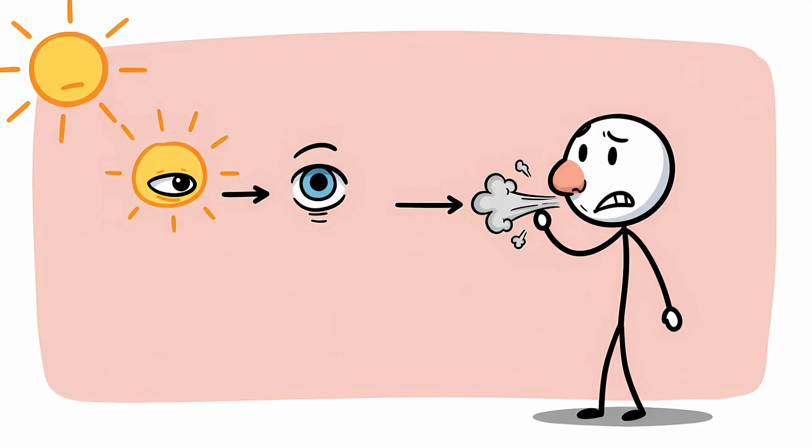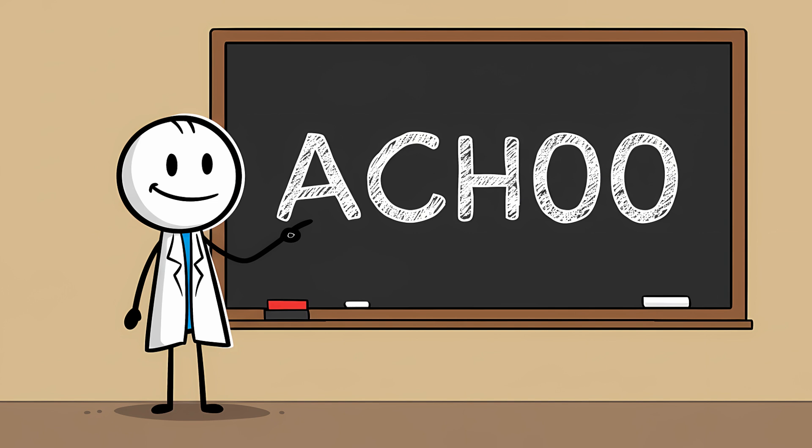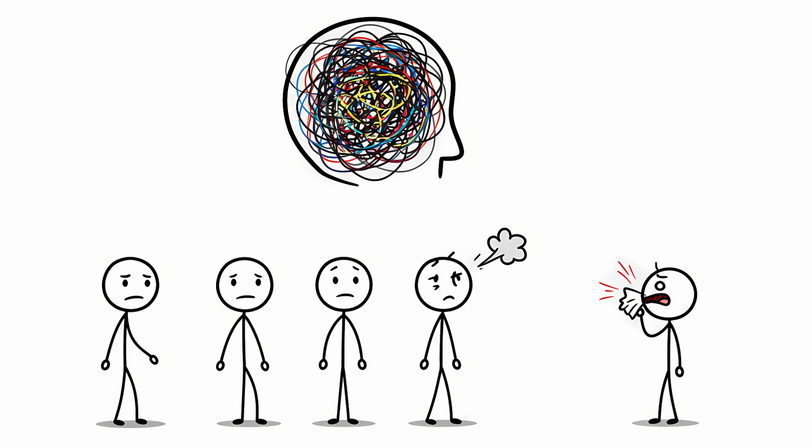This delightful quirk is called the photic sneeze reflex, or more amusingly, autosomal dominant compelling helioophthalmic outburst syndrome. Yes, the acronym is ACHOO. Scientists with a sense of humor are the best kind of scientists. About one in four people have this trait, and it's all thanks to some wonderfully messy wiring in your head.